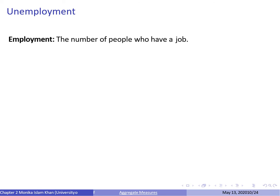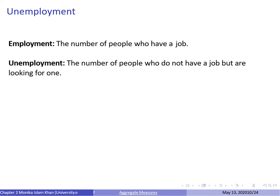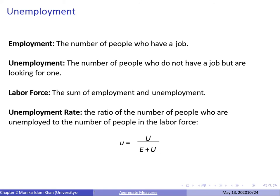Now let's move on to unemployment. Employment refers to people who have a job. Unemployment includes people who don't have a job but are actively looking for one — if you don't have a job and aren't looking, you're not considered unemployed. The labor force equals the number of employed plus the number of unemployed. The unemployment rate is the number of unemployed divided by the labor force.